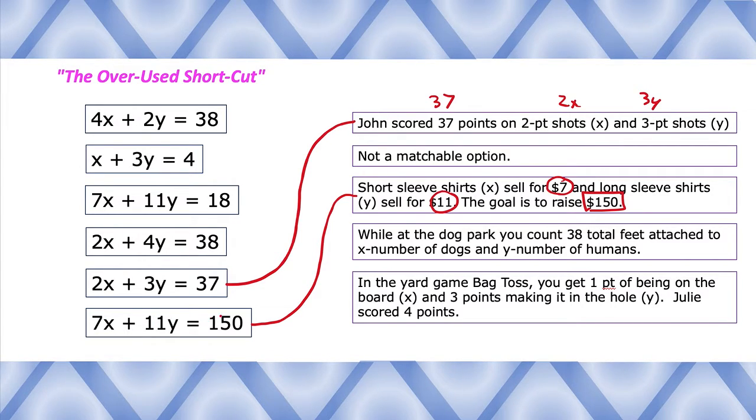Here we go, while at the dog park you counted 38 total feet attached to X number of dogs and Y number of humans. Most dogs have four legs and most humans have two, so that would be a 4x and a 2y and 38 total. So we're gonna go right up here, there you go, four legs for the dogs, two legs for the human, 38 total.